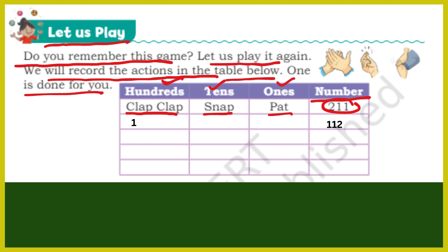318 — ones में 1 है तो snap भी 1 time करेंगे. Pat यहाँ पर 2 times करेंगे क्योंकि ones की जगह 2 लिखा हुआ है. Three hundred fifteen में clap 3 times, snap 1 time (क्योंकि tens 1 है), और ones यानि pat 5 times (क्योंकि ones की जगह 5 है). Two hundred fifteen में 2 clap, 1 snap, 5 pat. Two hundred twenty one में 2 clap (200), 2 snap (2 tens), 1 pat (1 one).